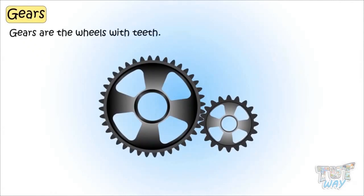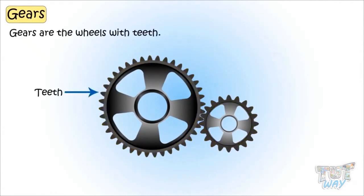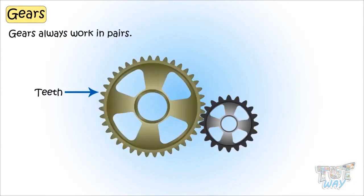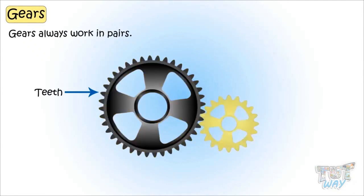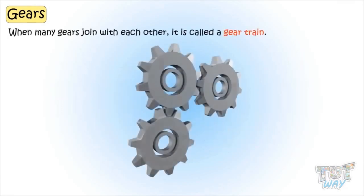Gears are wheels with teeth, and gears always work in pairs. The teeth of one gear interlock with the teeth of the other gear — they are meshed. Many gears joined together is called a gear train.